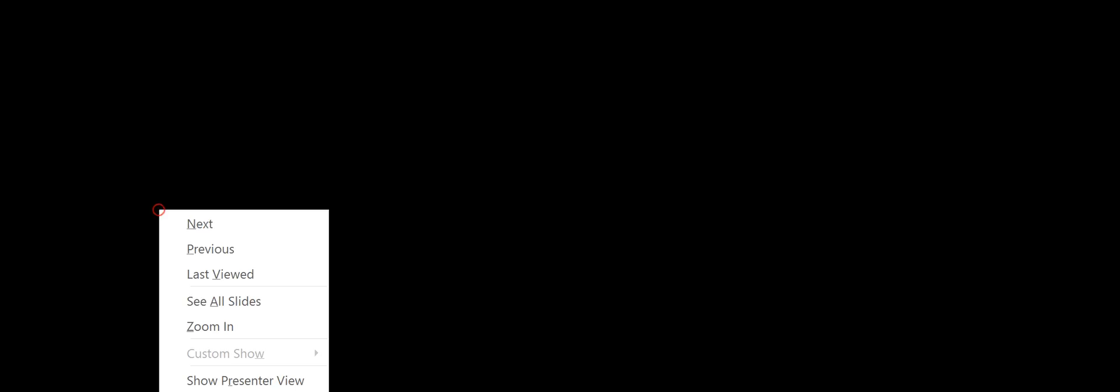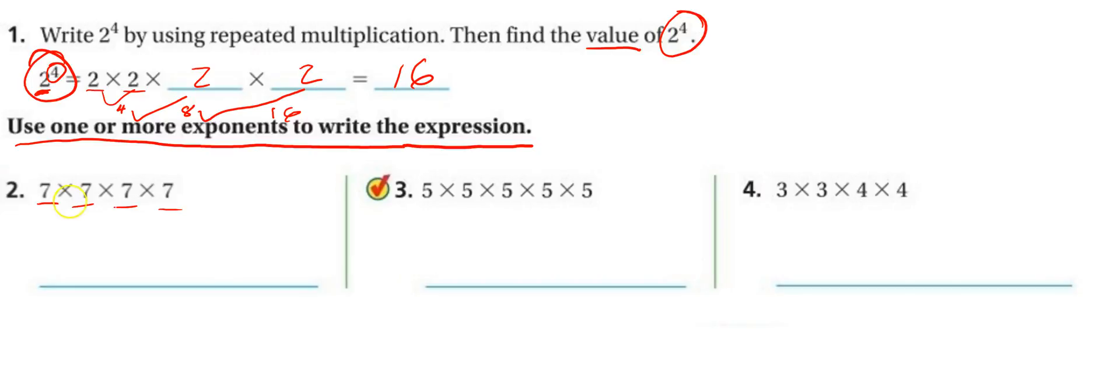Well, the base is the number that's repeated. So in this case, the base is 7. And then the exponent, how many times is 7 repeated or how many 7s are there? There are 4. That's all we have to do. It didn't ask us to find the value, so we don't need to.